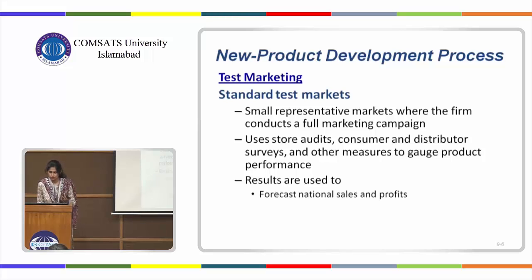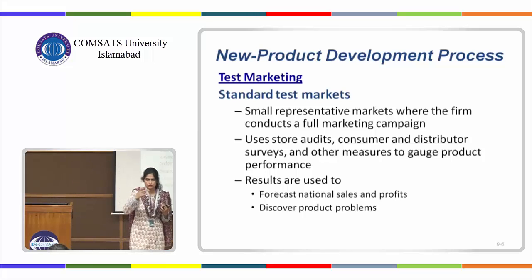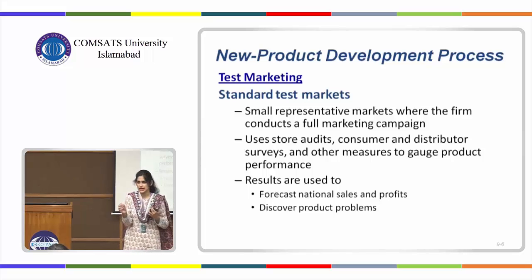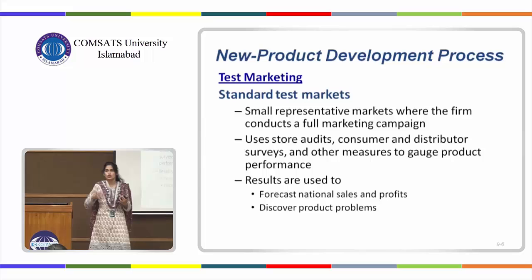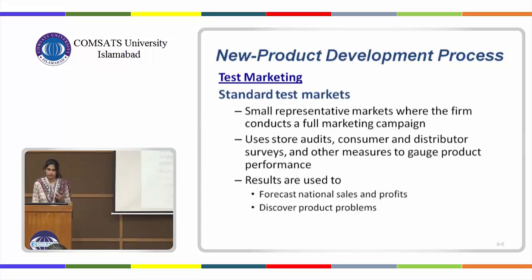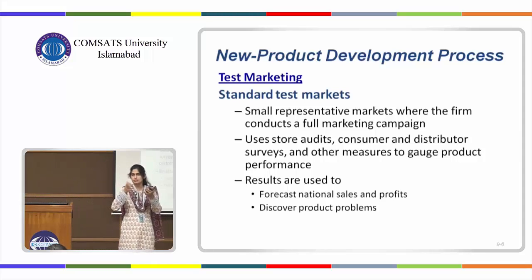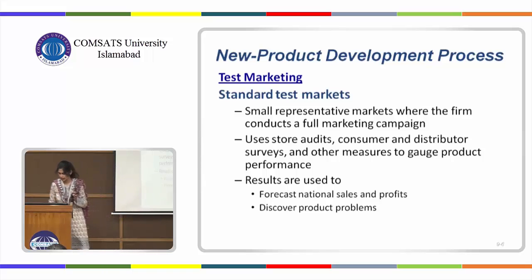You conduct store audits and surveys, which help you discover problems with the product. Since you're interacting with real-time customers, they'll be able to tell you where the product is lacking — if there's a problem in its usage, packaging, taste, look, or color. You can get direct feedback from the customer. You can also forecast sales at a national level. For example, launching in Islamabad and Lahore gives you a good starting point to forecast how the product would do throughout Pakistan.